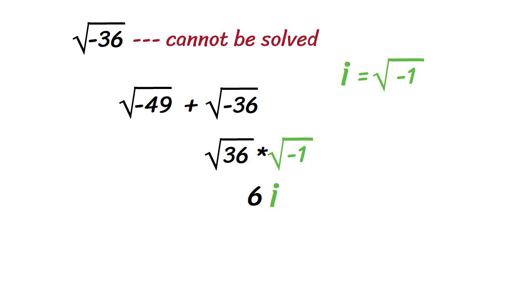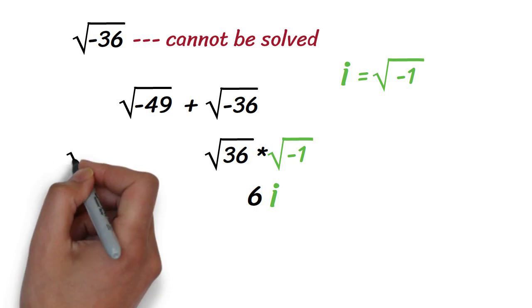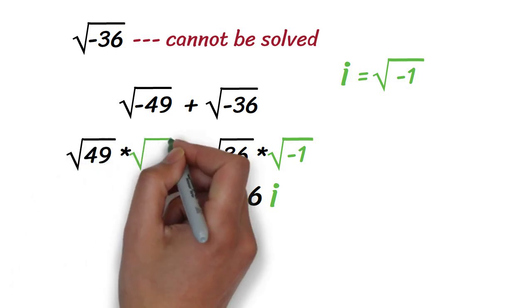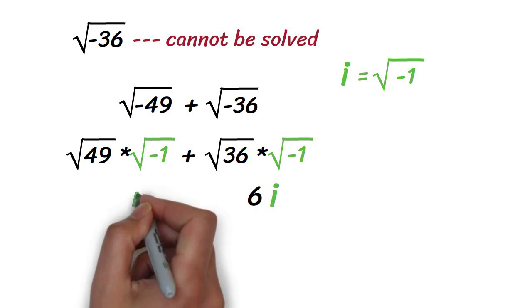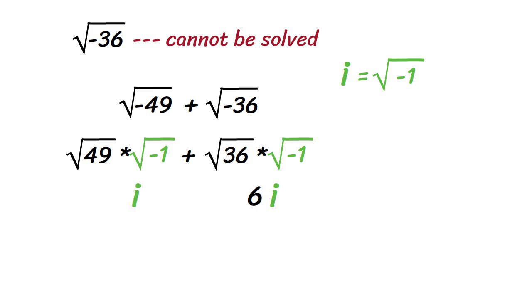We can do the same thing for the square root of negative 49. This can be written as square root of 49 times square root of negative 1. We know that the square root of negative 1 is i.